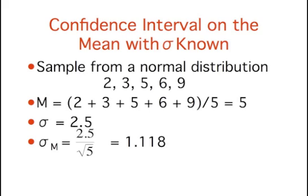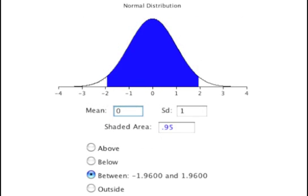The five numbers shown were sampled from a normal distribution with a standard deviation of 2.5. To compute the 95% confidence interval, start by computing the mean and standard error. The mean equals 5. The standard error equals 2.5 divided by the square root of 5, since n equals 5, and is equal to 1.118. Z sub 0.95 can be found using the normal distribution calculator. You specify that the shaded area is 0.95 and indicate that you want the area to be between the cutoff points. As shown here, the value is 1.96.